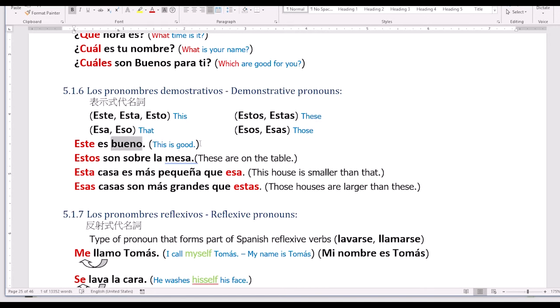Este es bueno. This is good. This este, it means this. Estos están sobre la mesa. These are on the table. This is the plural form, so we are using estos, not este. We will use estos because there are things on the table.